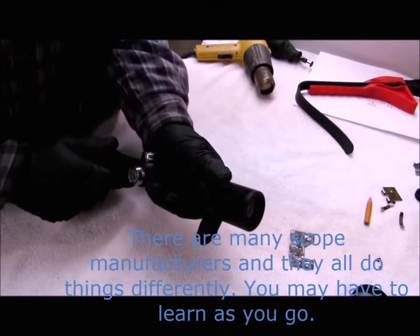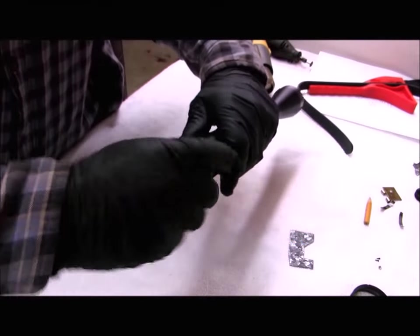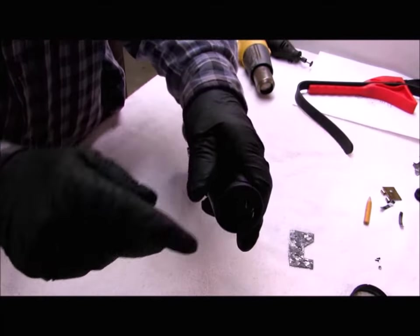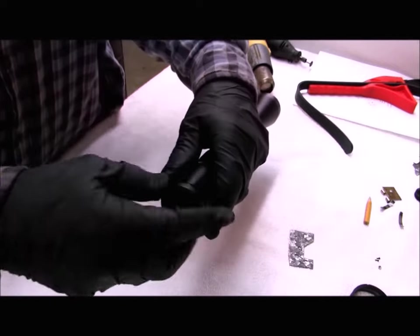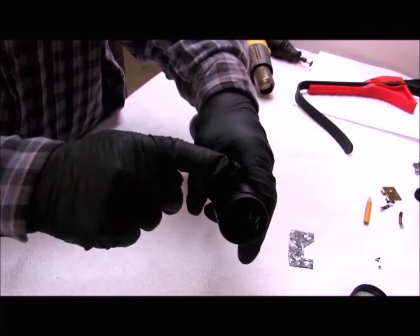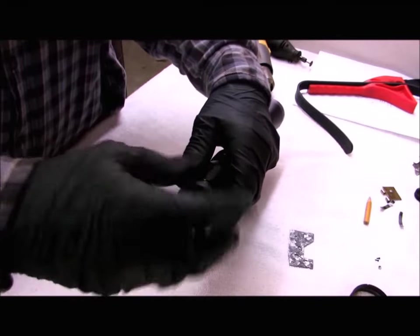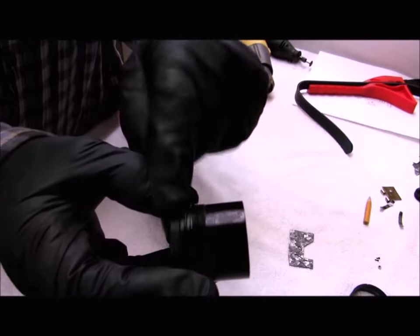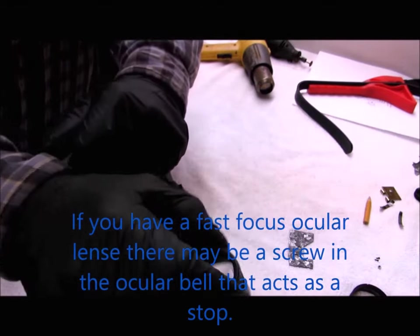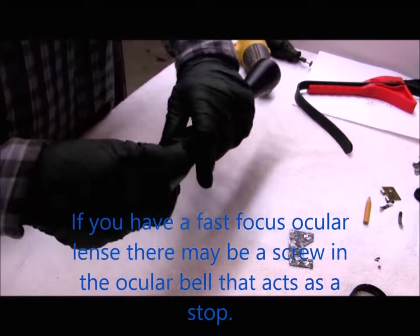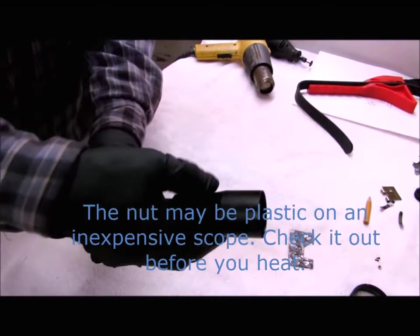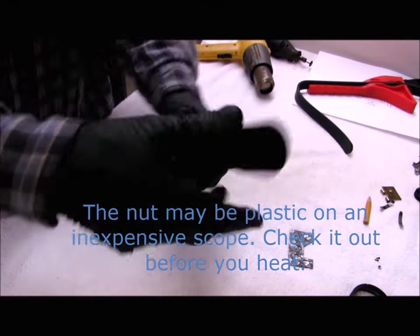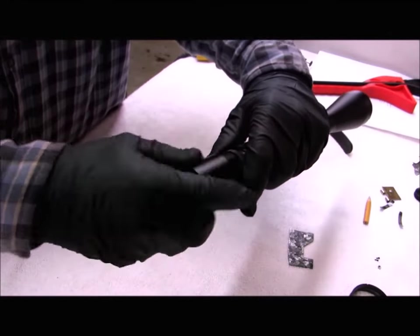Next, I removed the ocular lens. I applied some heat to this part. It does not have thread locker, but the heat, again, just expands the threads. This one has a rubber protector, so obviously you don't want to put your heat directly on the rubber. Heat back on the tube. And there's the ocular lens. There's an O-ring on it as well to seal the scope. Next, you break this lock nut loose. This is where you adjust your focus on your reticle.